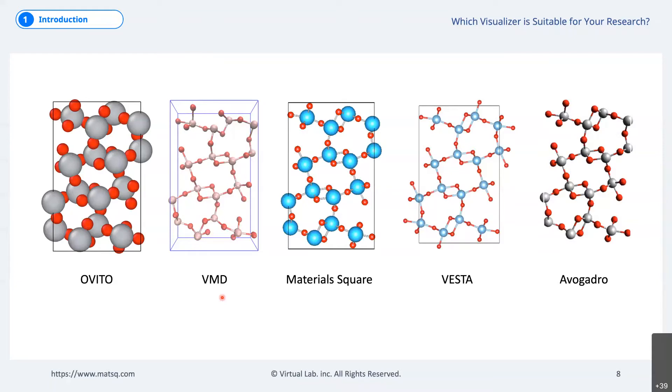As you know, Materials Square is a cloud simulation platform developed by our company. VESTA is a visualization that is mainly used in the field of inorganic materials and it is software developed by JP Minerals in Japan. Lastly, Avogadro is a software developed by Hutchison Group at the University of Pittsburgh, known for its OpenBabel and offers powerful capabilities, especially in the field of chemistry.